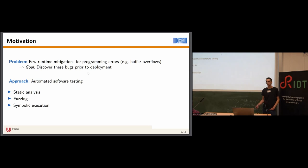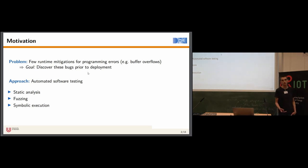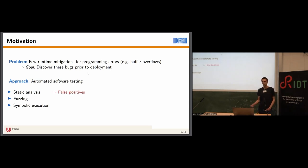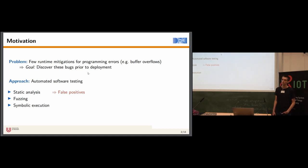A promising technique to discover these bugs is automated software testing. I'd like to mention a few testing techniques you may have heard of. A very prominent one is static analysis, where the program is analyzed statically — it is not executed. For this reason, it is relatively easy to employ static analysis on a given code base. However, the problem is that the analysis can yield false positives, making it difficult to interpret results since a reported bug might just be a false positive.